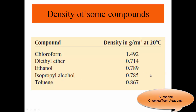So if a mixture of any of these compounds with water forms two layers, the top layer would be the lighter one and the bottom layer would be the heavier one. For example, if chloroform is immiscible with water and forms two layers, the top layer would be water and the bottom layer would be chloroform, because chloroform has higher density.